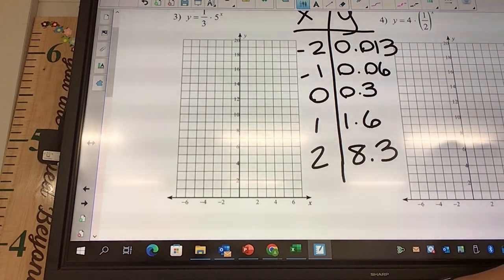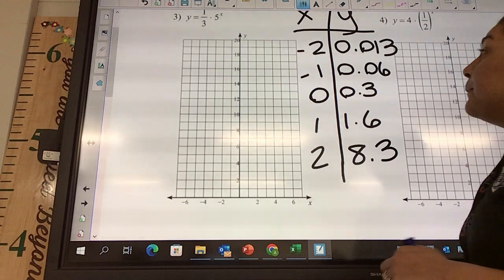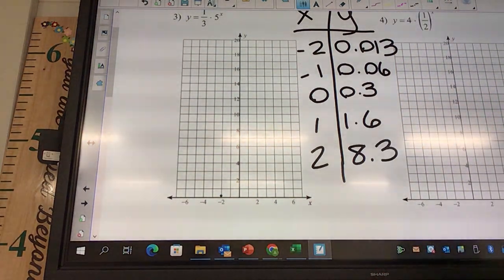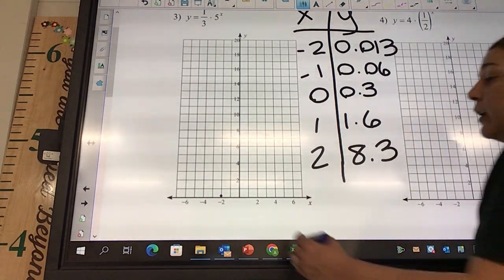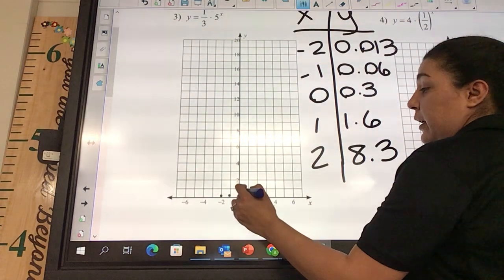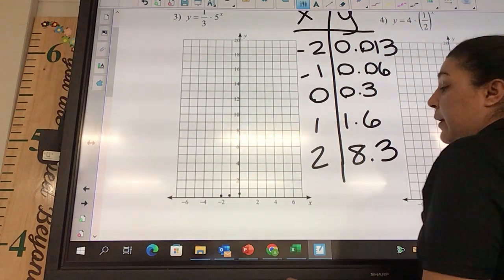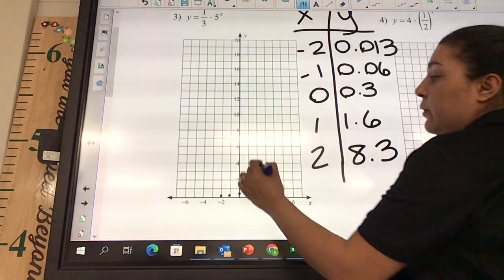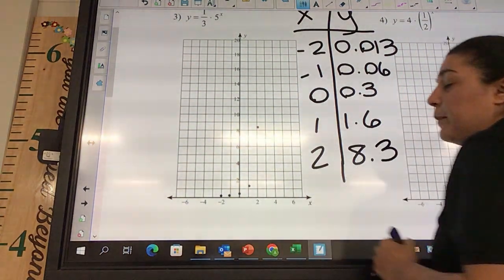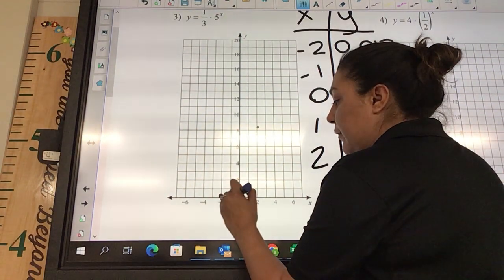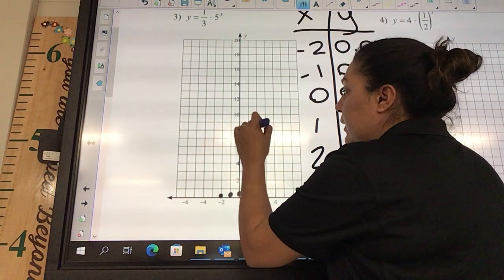I don't know what they are, so I'm being so serious. So we got negative 2 and 0.013, so that's dang near right there at the bottom. Negative 1, and that's going up just a tad. So that's dang near at the bottom. 0.3, that's dang near at the bottom. 1 and 1.6, so we're moving up just a little bit. And then 2 and 8 and some change, so we're up there.